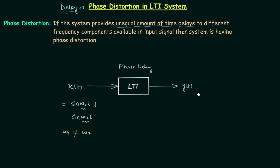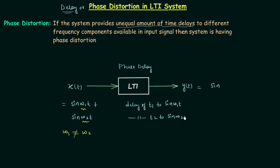The output y(t) is equal to sin(ω₁t − t₁). This particular system is providing a delay of t₁ to the first component of the input signal, that is sin(ω₁t), and the same system is providing a delay of t₂ to the second component of the signal x(t), that is sin(ω₂t). So there are two delays provided by the same system depending on the frequency. When the frequency is ω₁ the delay is t₁, and when the frequency is ω₂ the delay is t₂.